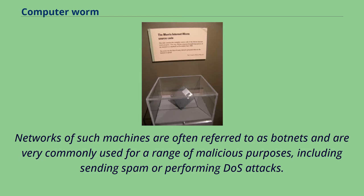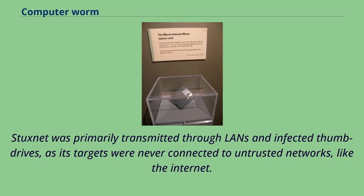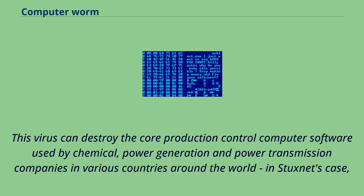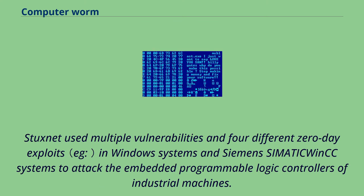Some special worms attack industrial systems in a targeted manner. Stuxnet was primarily transmitted through LANs and infected thumb drives, as its targets were never connected to untrusted networks like the internet. This virus can destroy the core production control computer software used by chemical, power generation, and power transmission companies in various countries. In Stuxnet's case, Iran, Indonesia, and India were hardest hit. It was used to issue orders to other equipment in the factory and to hide those commands from being detected. Stuxnet used multiple vulnerabilities in four different zero-day exploits in Windows systems and Siemens SIMATIC systems to attack the embedded programmable logic controllers of industrial machines.